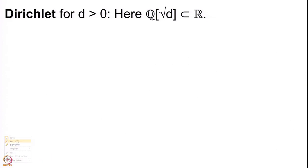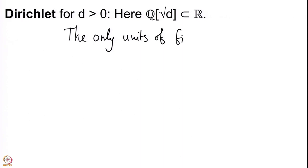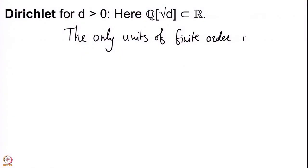Since Q(√D) ⊂ ℝ, if we look at complex numbers of finite order — numbers ω where ωⁿ = 1 for some n — the only such elements that lie on the real line are +1 and −1. Therefore the only units of finite order in Q(√D) are ±1.